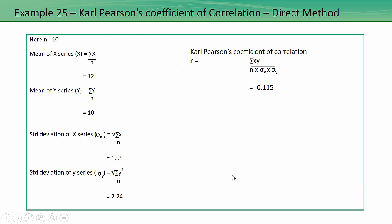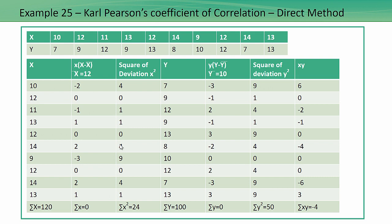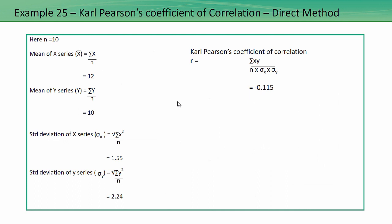Now let us find out the standard deviation of the X series, which is the square root of summation of x squared divided by N. Summation of x squared was 24, so 24 divided by 10 is 2.4, and the square root of 2.4 is 1.55. The standard deviation of the Y series would be the square root of summation of y squared divided by N, which is 50 divided by 10 — that is the square root of 5, which is 2.24.